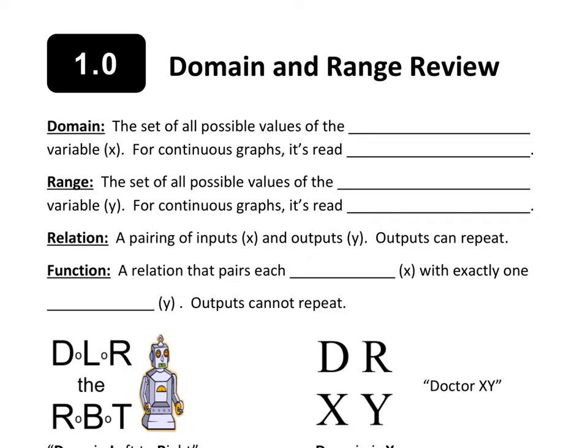Domain, definition. The domain is the set of all possible values of the input variable. We're looking for the word input right there, or independent. Or you probably know it as domain is the x value. That's still true. Domain is the x value, but we're going to call it the independent value. For continuous graphs, so graphs that are connected together, it is read from the left of the graph to the right of the graph. Does this sound like things that you've heard before?